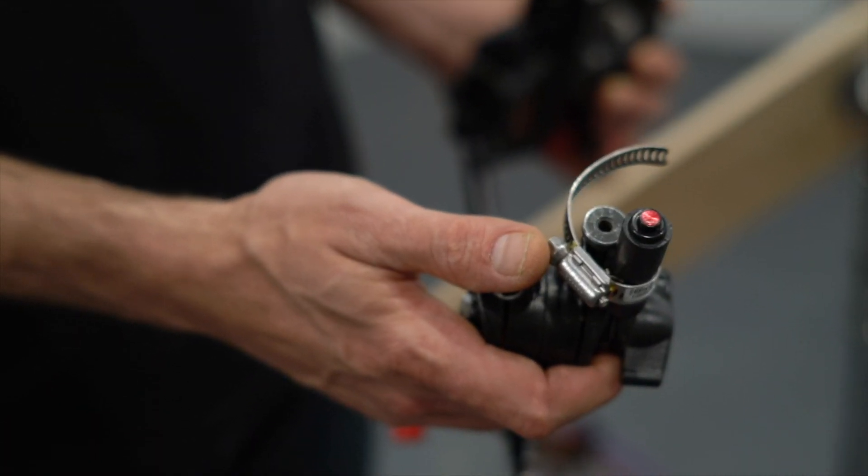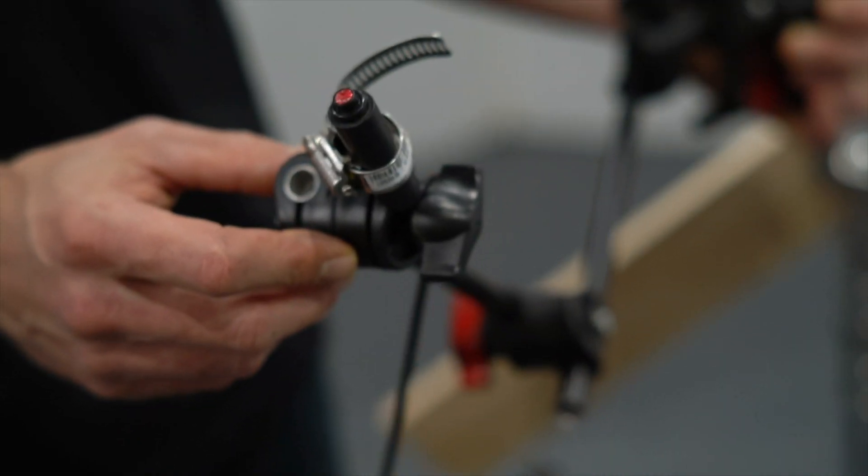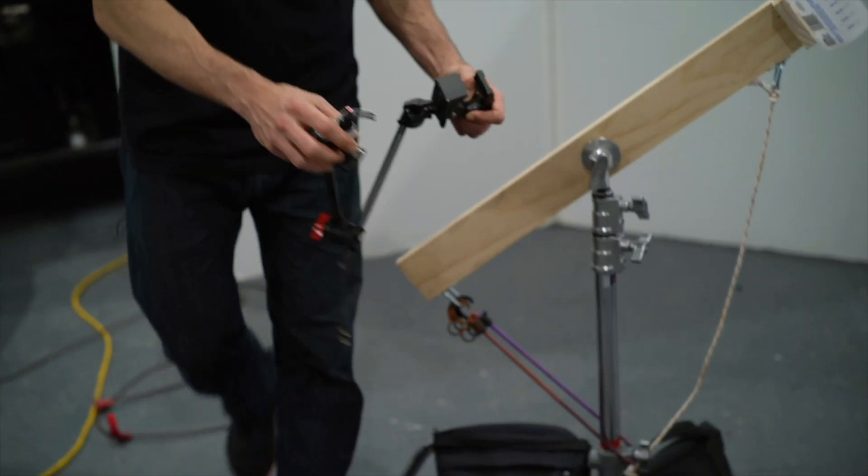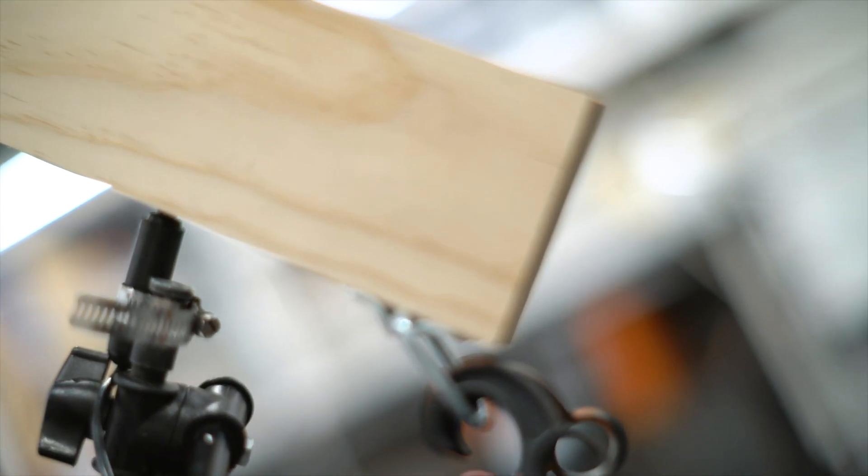So here we have a button trigger meant to trigger a strobe pack that I've connected to one of these modular arms. I'm going to place this on the c-stand so that at the end of the motion, it presses the button.